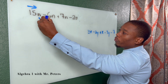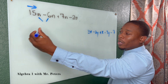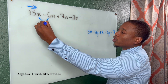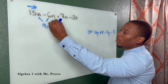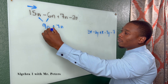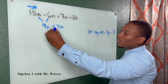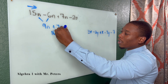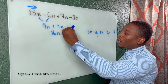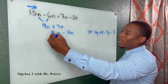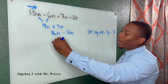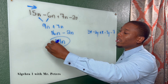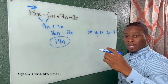We have to add from left to right. So we're going to do 15n minus 6n, which gives me 9n, plus 7n, which gives me 16n. Then when I bring down that negative 2n, our final answer would be 14n.